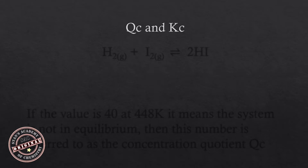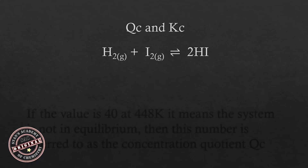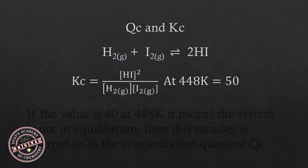Two terms that we commonly use to interpret the value of the equilibrium constant or the concentration quotient expression are Qc and Kc. Let's take the equation H₂ plus I₂ reversibly giving you 2HI. We can write the equilibrium constant expression as Kc equals [HI]² divided by [H₂] times [I₂]. If we substitute the equilibrium concentration values at 448 Kelvin we get a value of 50, so Kc is 50.